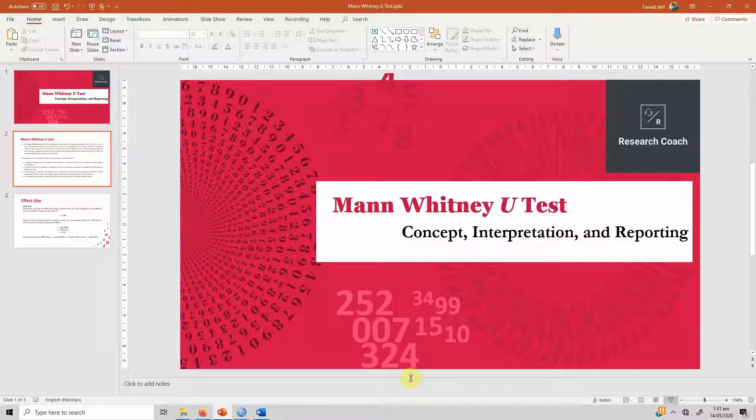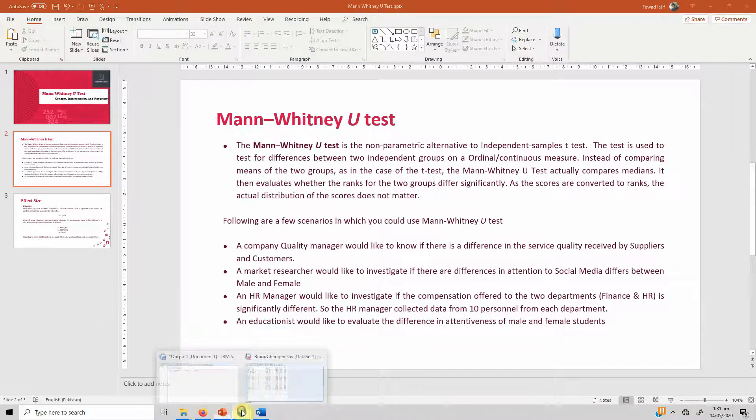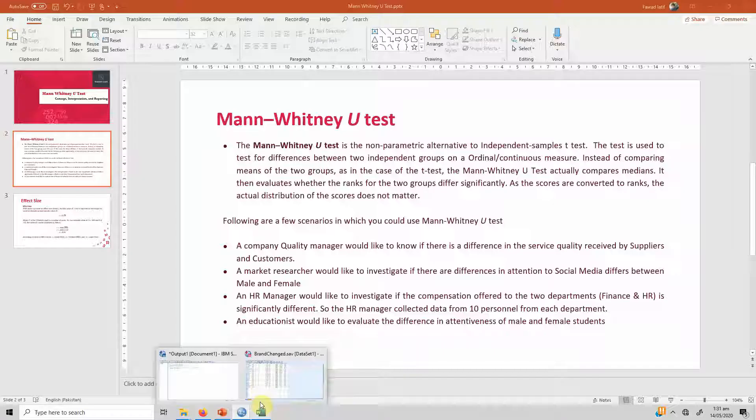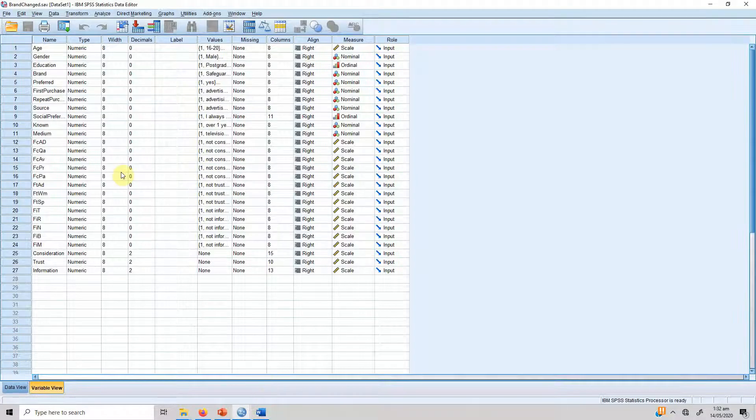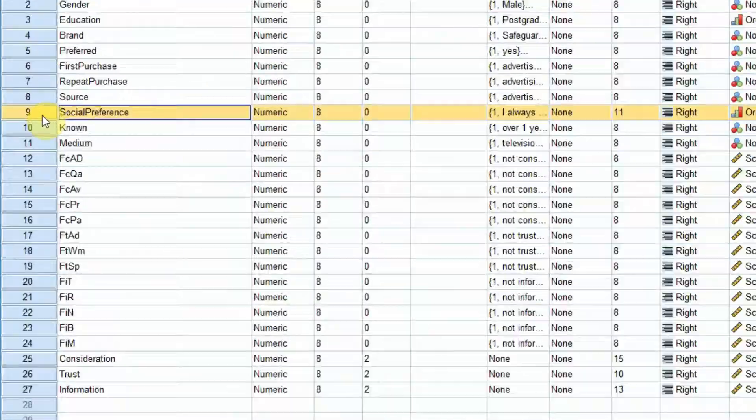For this particular session, our example is that we want to see, this is our problem, to identify if there exists difference in preference for watching social media ads between male and female. Our dependent variable is social preference.